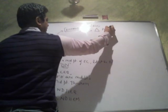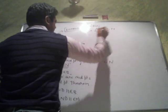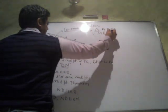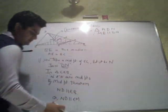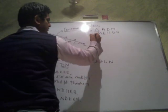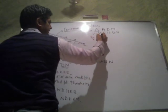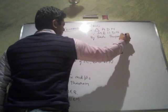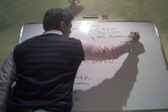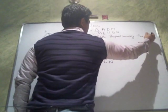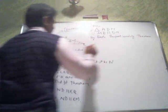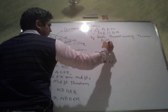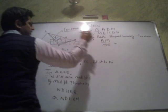Now in triangle ADN, since ME is parallel to DN — I have just proven ND is parallel to EM — by the Basic Proportionality Theorem, you can state that AM upon MD is equal to AE upon EN.